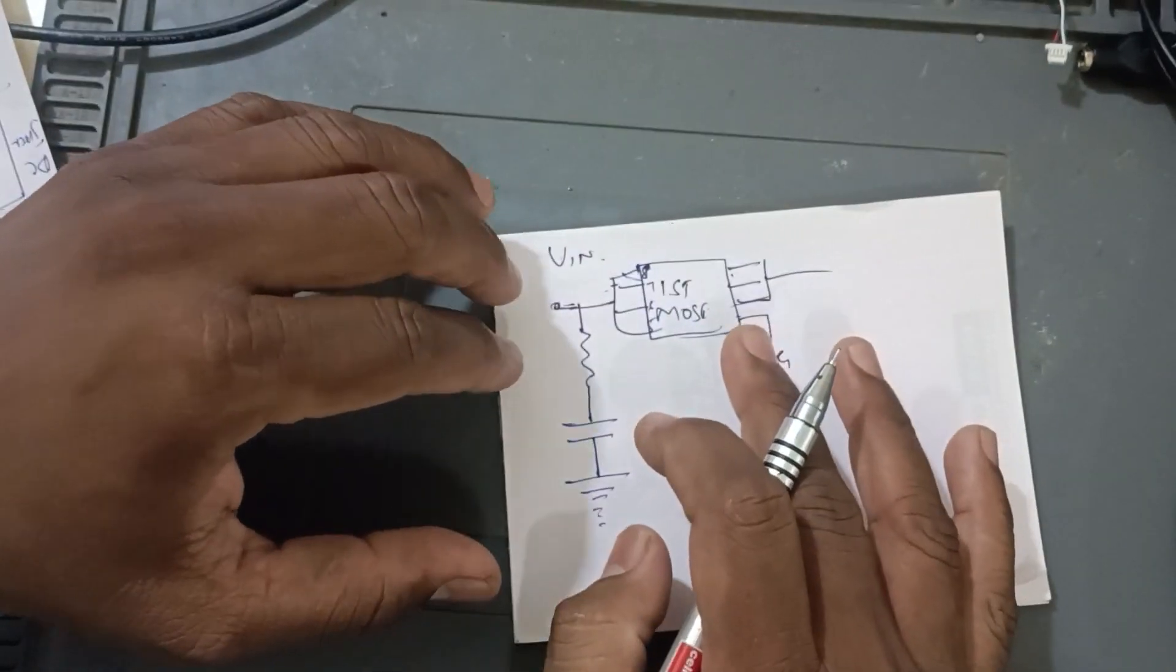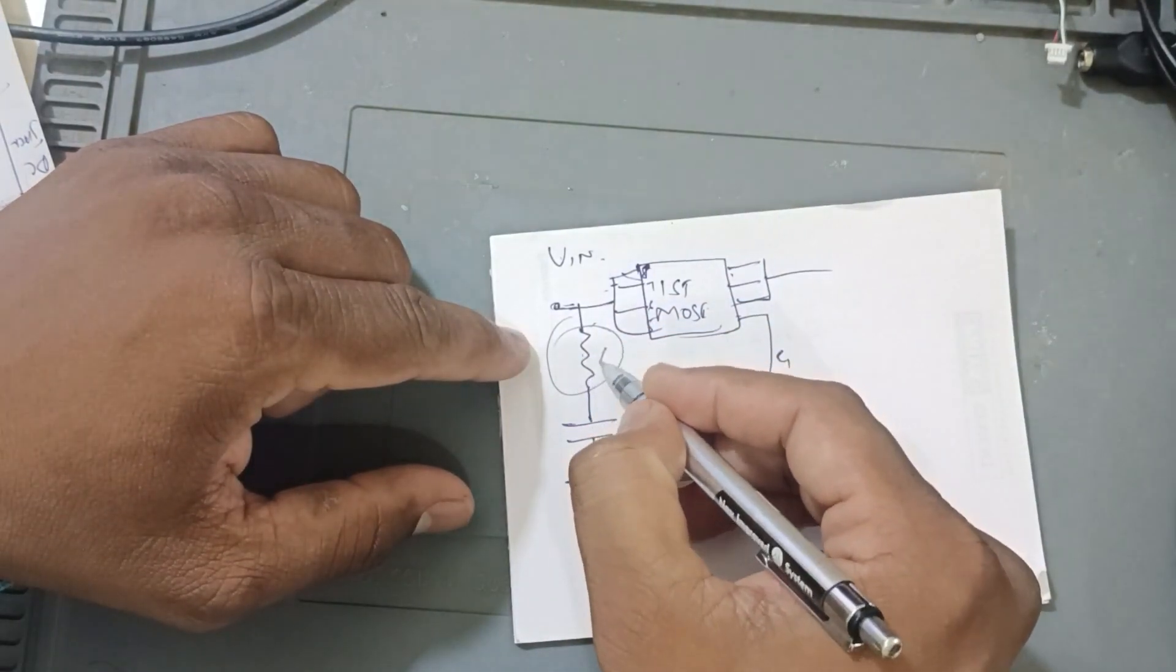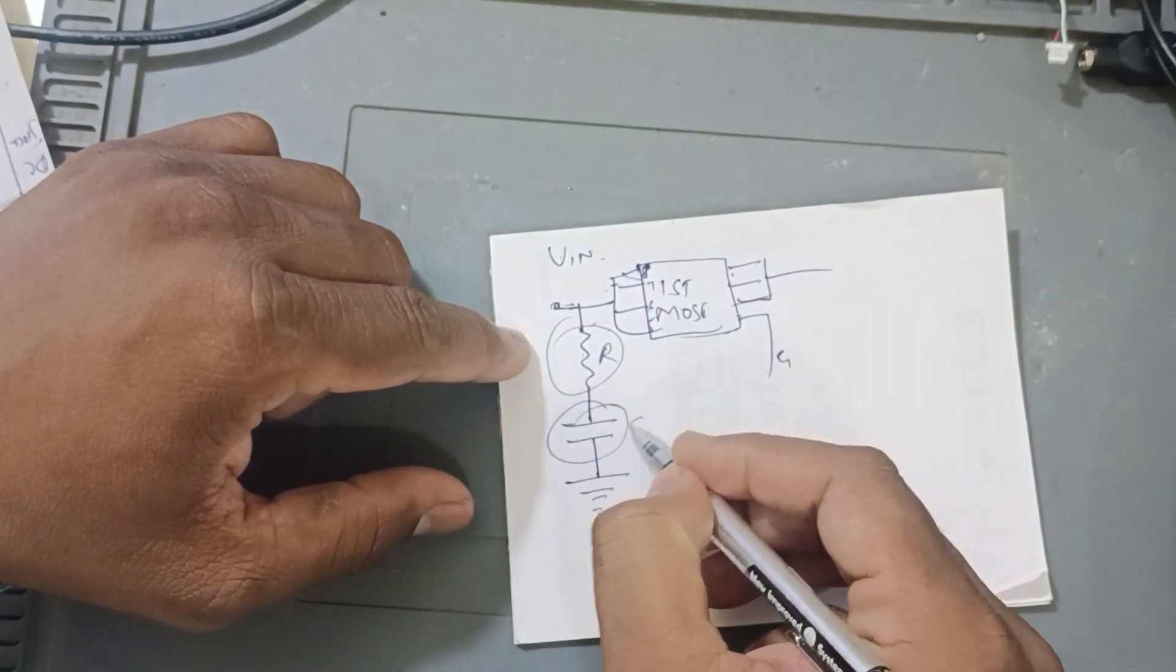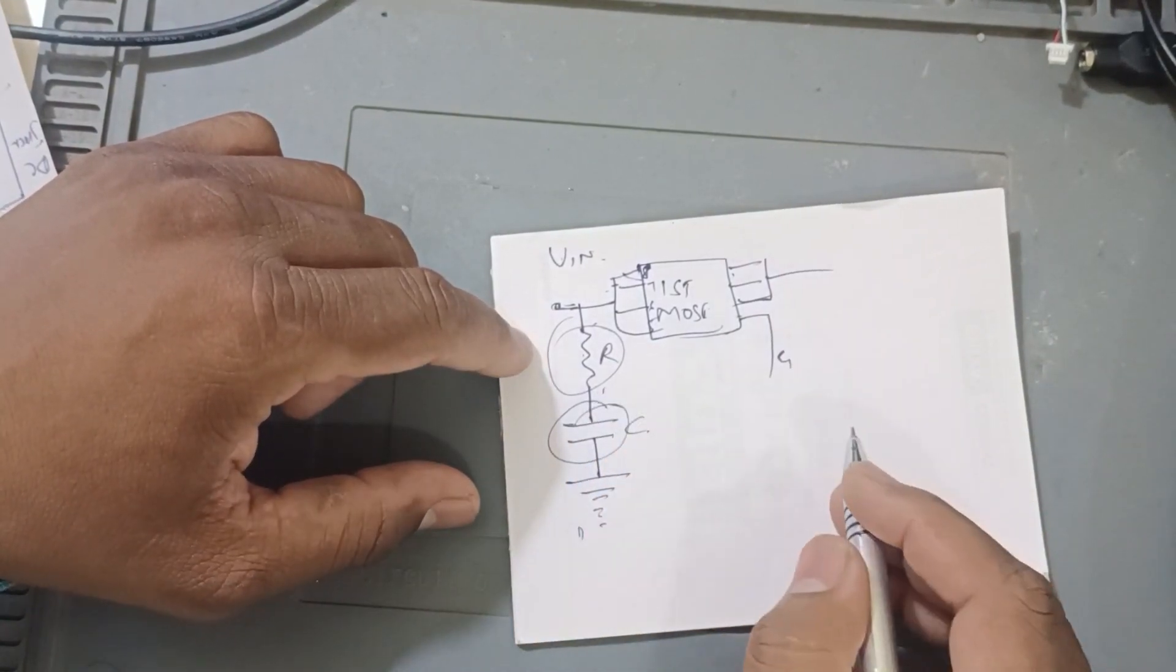See, in some schematics, definitely you will be seeing this resistor, capacitor and ground. Okay, this is also one type.